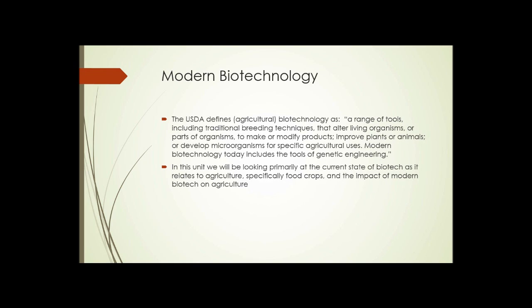Modern biotechnology, as defined by the USDA, is a range of tools, including traditional breeding techniques, that alter living organisms or parts of organisms to make or modify products, improve plants or animals, or develop microorganisms for specific agricultural uses. Modern biotechnology today includes the tools of genetic engineering. So biotechnology encompasses a lot of techniques, and essentially anything using biological systems to make something useful is biotechnology. In this unit, we're going to be looking primarily at the current state of biotech as it relates to agriculture, specifically food crops, and the impact of modern biotech — much of which relates to genetic engineering or genetic modification.